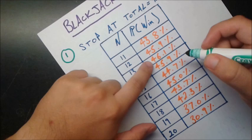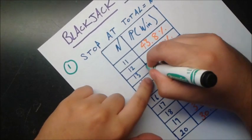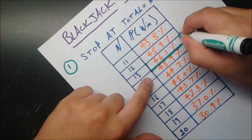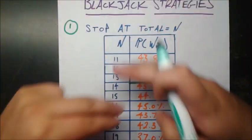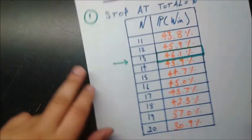It turns out the optimal one is this 46.1%, which is 13. So let's box that one in. This is our winner for this strategy, stopping when total is equal to n. So if you're using this, you might want to stop when you're at 13.